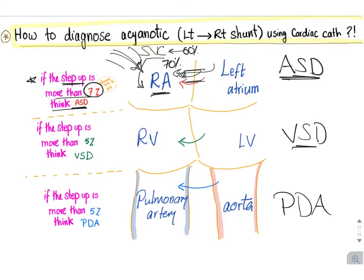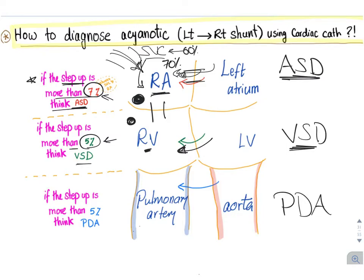For VSD, we measure oxygenation in the right atrium and the right ventricle. Normally they should be the same since they are interconnected. However, if oxygenation in the right ventricle is more than in the right atrium, there must be a shunt — this is a VSD. The threshold here is a step-up of more than 5%.